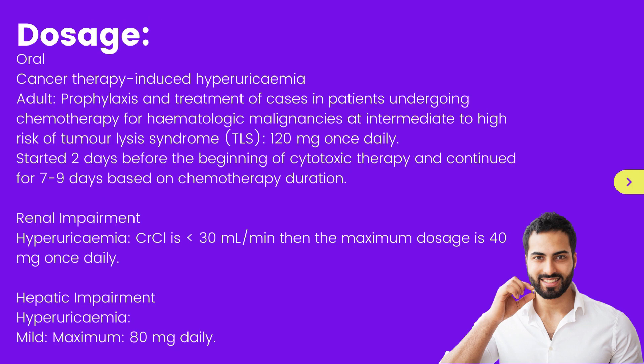Oral — Cancer therapy-induced hyperuricemia in adults: prophylaxis and treatment in patients undergoing chemotherapy for hematologic malignancies at intermediate to high risk of Tumor Lysis Syndrome (TLS): 120 mg once daily, started 2 days before the beginning of cytotoxic therapy and continued for 7–9 days based on chemotherapy duration.